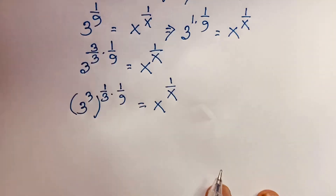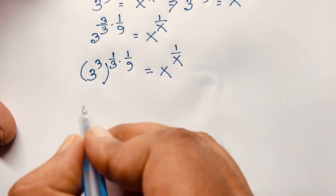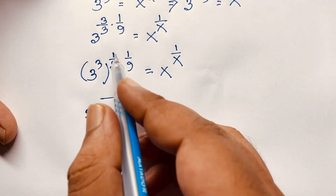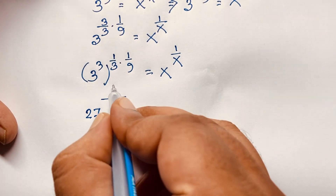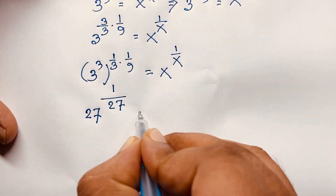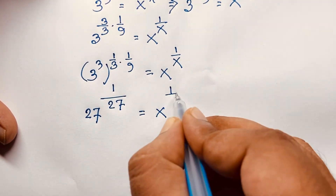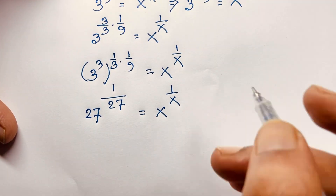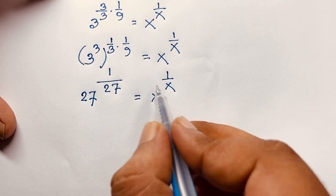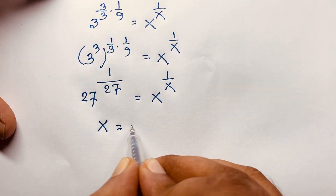Now, 3 to the power 3 equals 27. The exponent simplifies: 1 times 1 equals 1, and 3 times 9 equals 27. So we have: 27 to the power 1 over 27 is equal to x to the power 1 over x. Comparing both sides, we can see that x is equal to 27.